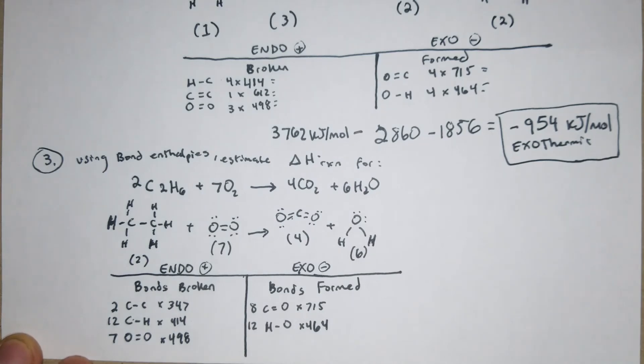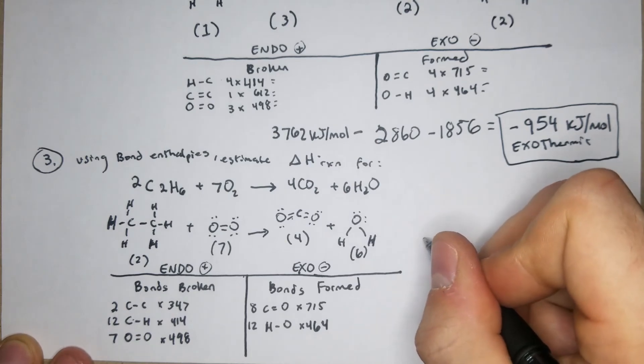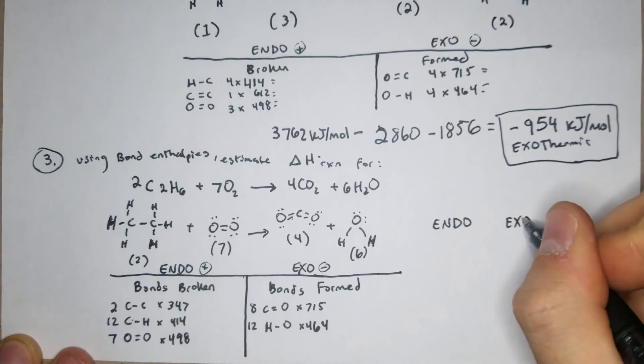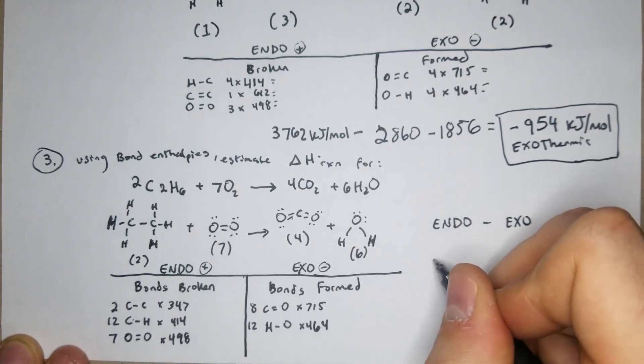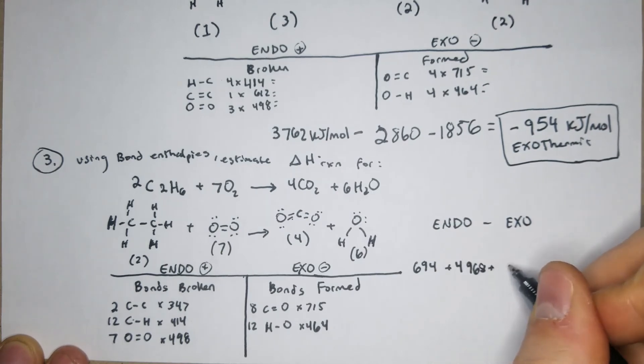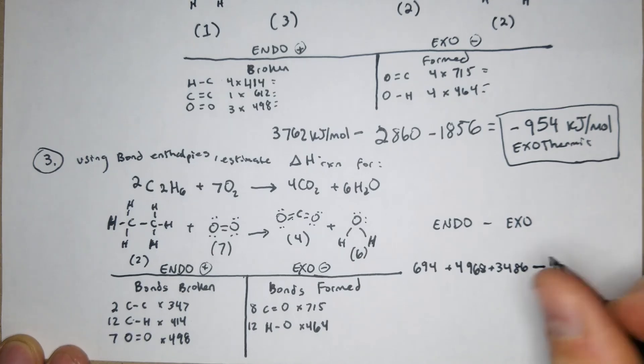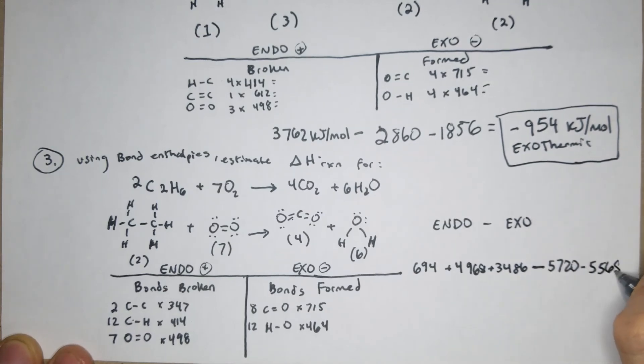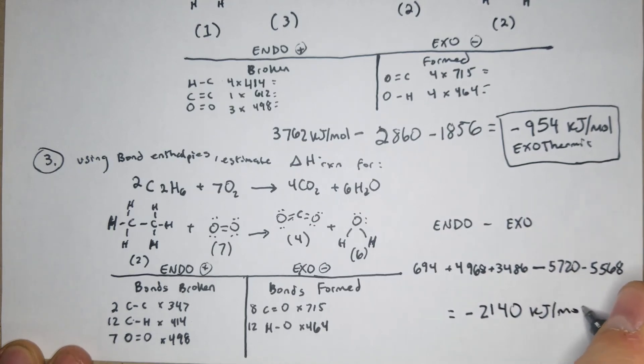So let's see what we get. We have for endothermic 694 plus 4968 plus 3486 minus, now that we're on the exothermic side, 5720 and then minus 5568. And that's going to equal negative 2140 kJ per mole, and that's going to be exothermic.